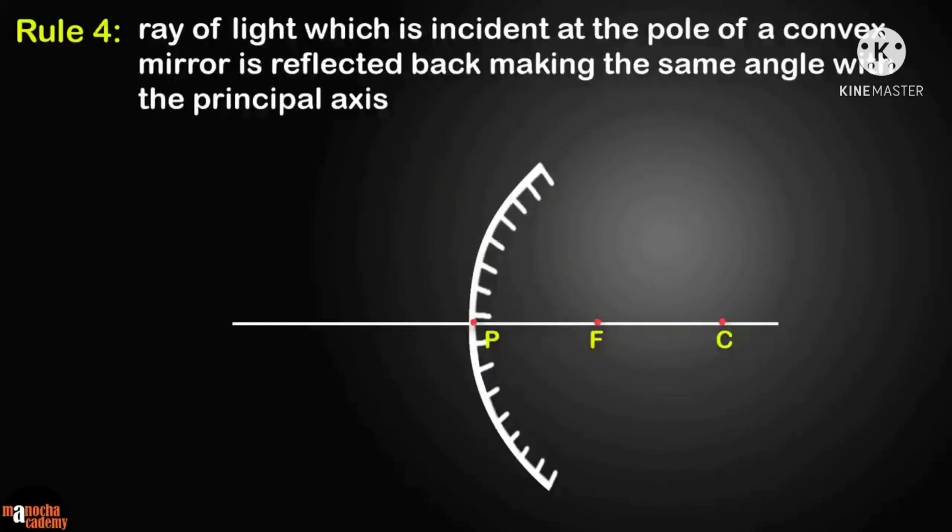Rule 4: a ray of light which is incident at the pole of a convex mirror is reflected back making the same angle with the principal axis. Here the angle of incidence equals the angle of reflection.